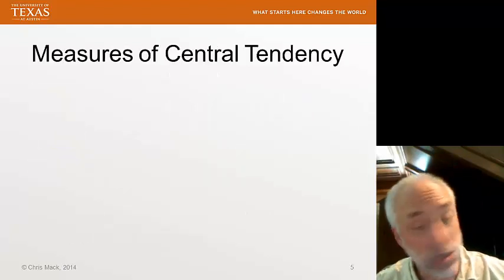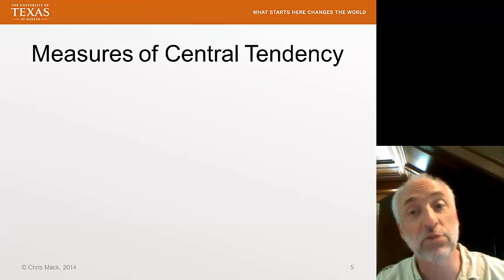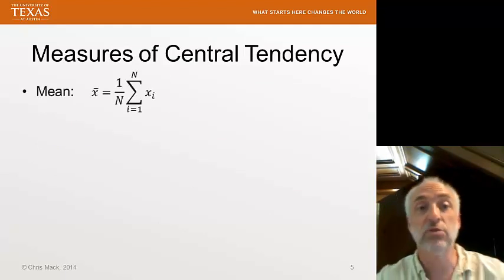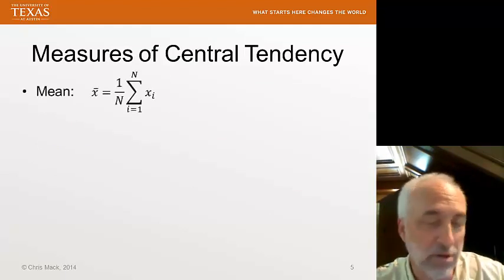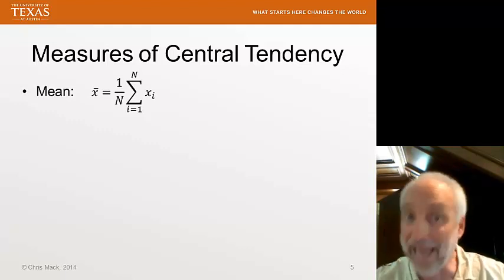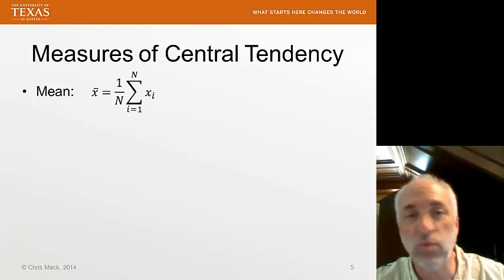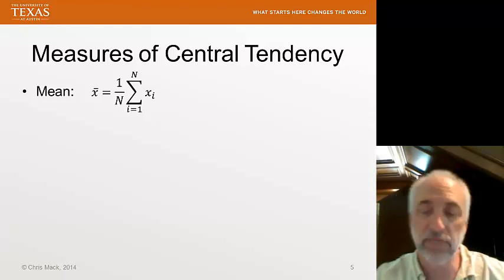So besides the shape, the next thing we want to discuss is a measure of central tendency. There are many measures of central tendency, but by far the most common is the mean, also called the average or the arithmetic mean. It's simply the sum of all the data points divided by the number of data points.